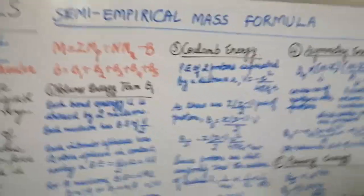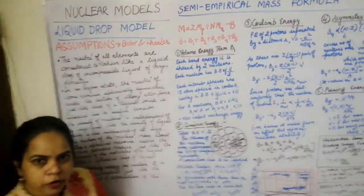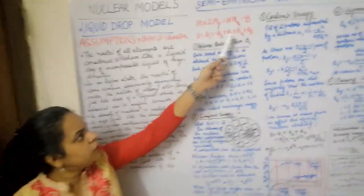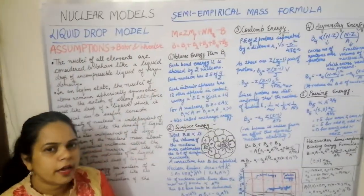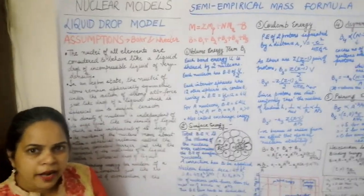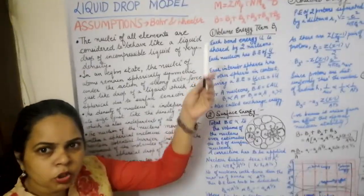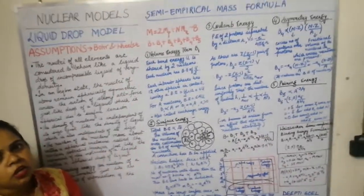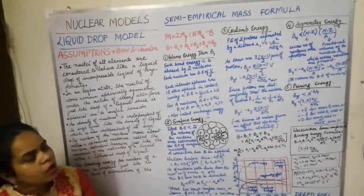The binding energy depends on five contributions: B1, B2, B3, B4, and B5. These five contributions must be added together to calculate the total binding energy of the nucleus.